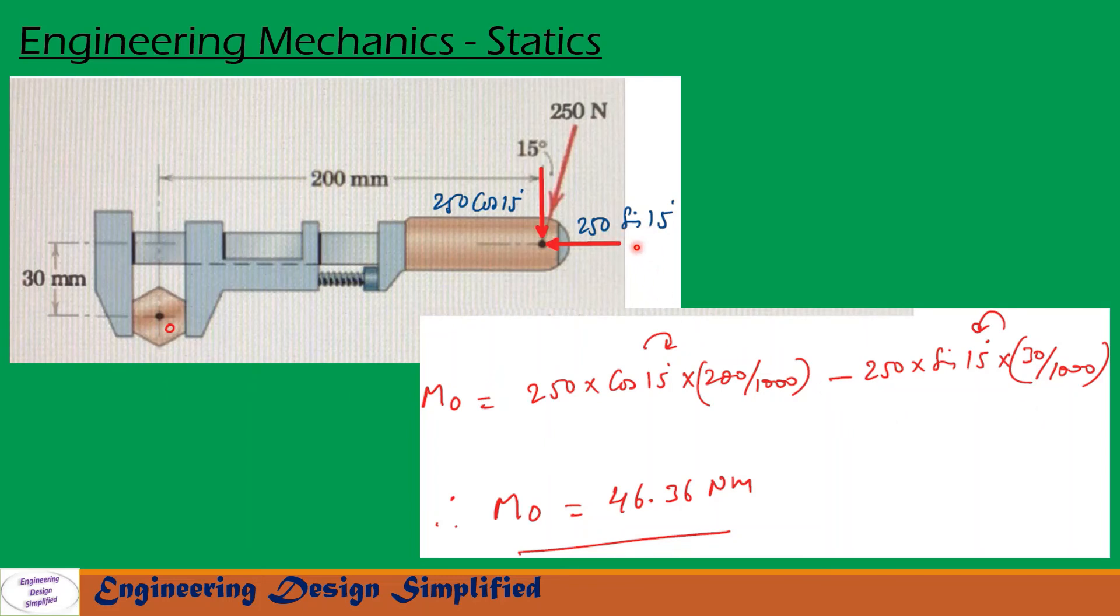After simplifying this equation, we get Mo equal to 46.36 Newton meters. So this is the moment that will be generated due to this 250 Newton force.